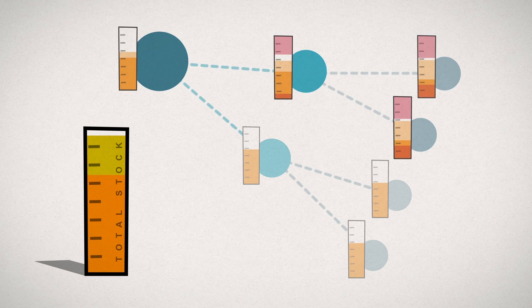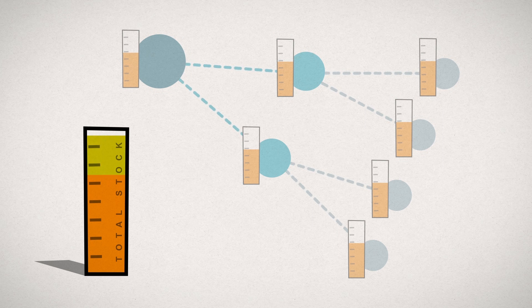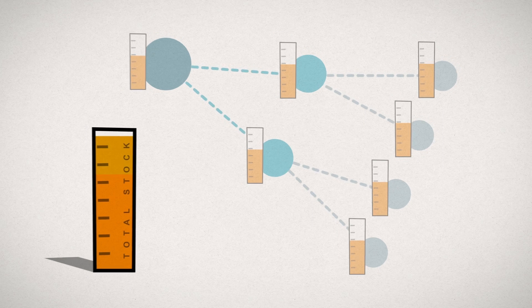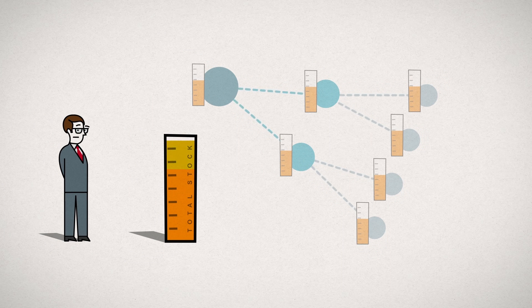Unfortunately, Mr. Weber is out of ideas. There is a concept that can help Mr. Weber further reduce inventory levels across the entire network: Multi-echelon optimization.